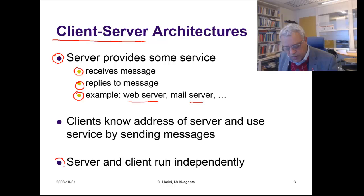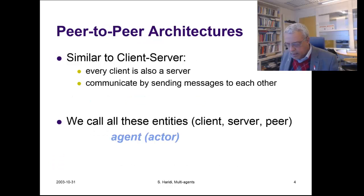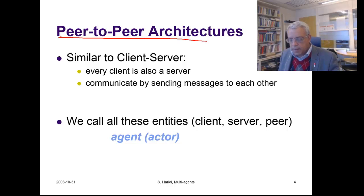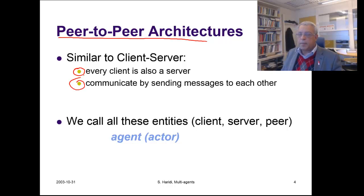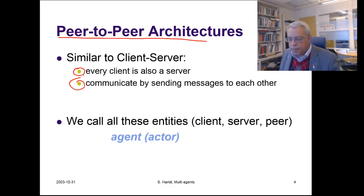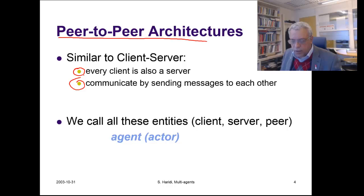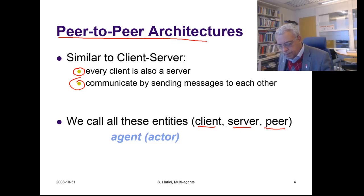Clients and servers run concurrently and they might fail independently of each other. Another architecture is peer-to-peer architecture, where you organize your software as a set of agents. These agents work as both clients and servers and they communicate with each other by sending messages. There is no notion of hierarchy between them — these are peers, which is why the word 'peer' is used. They serve other peers and also request services from other peers. We call all these entities — client, server, and peer — agents or actors.